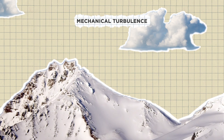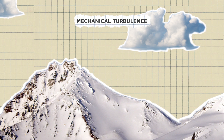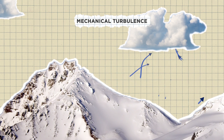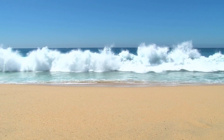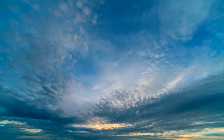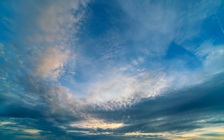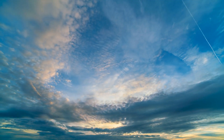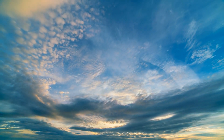Wind flows up a mountain smoothly, but on the other side as the terrain slopes down, the air falls with it and becomes turbulent, similar to waves crashing on the beach. This turbulence is typically encountered at lower altitudes, so it usually doesn't affect flights cruising at high altitudes.